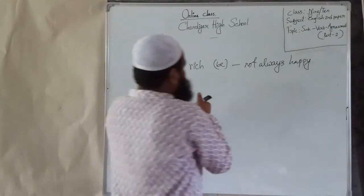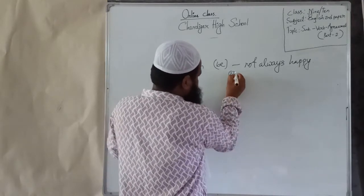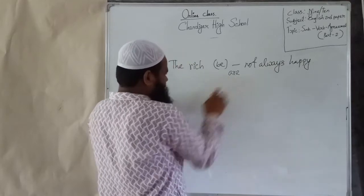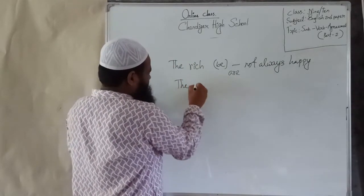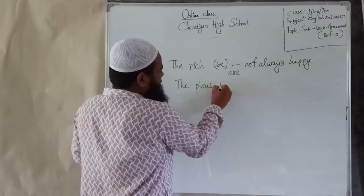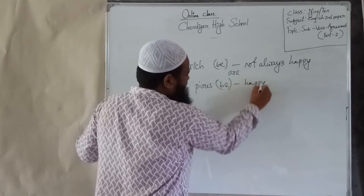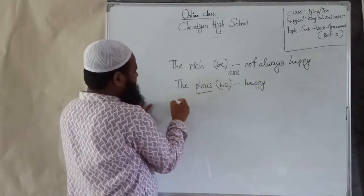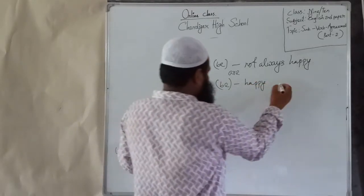For example: 'The rich are not always happy' — here the verb will be 'are.' Another example: 'The pious are happy' — here 'pious' is an adjective, and because of 'the,' it has become plural, so the verb will be plural — 'are.'